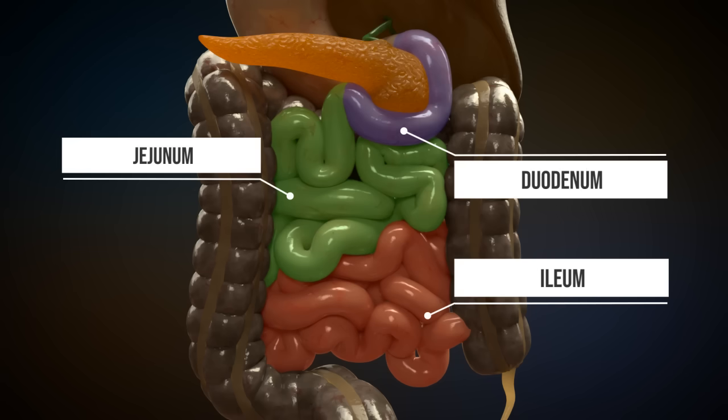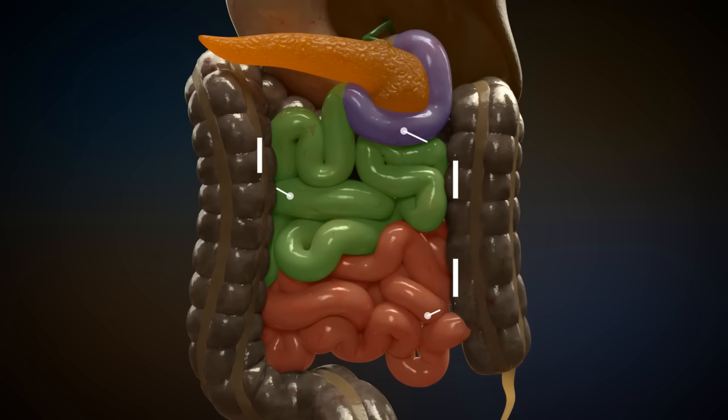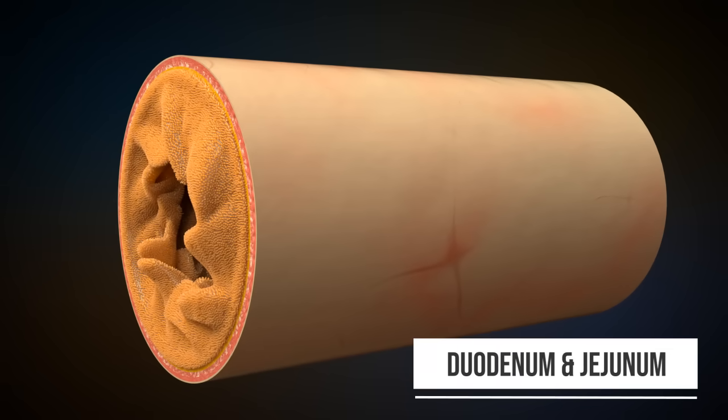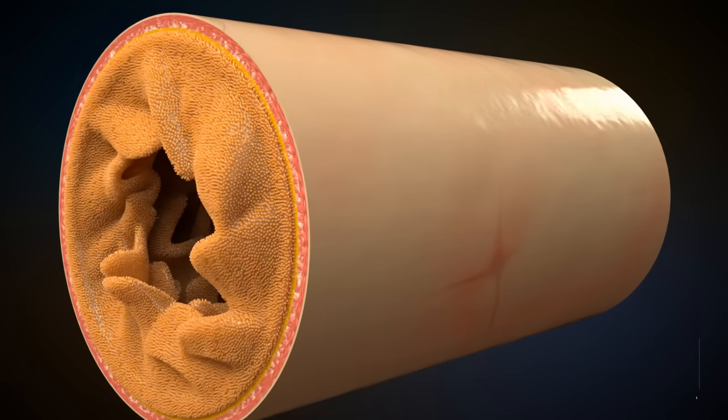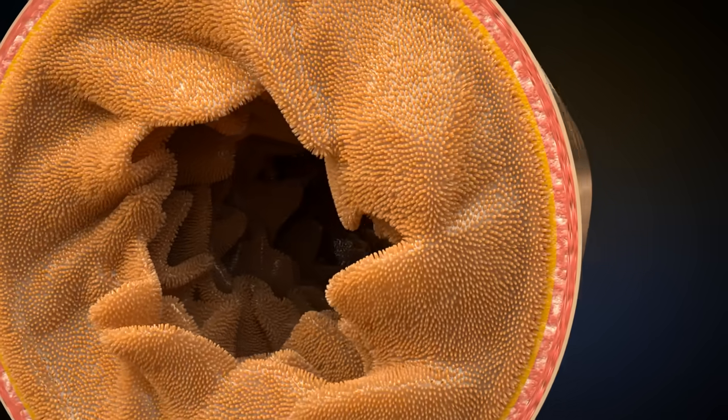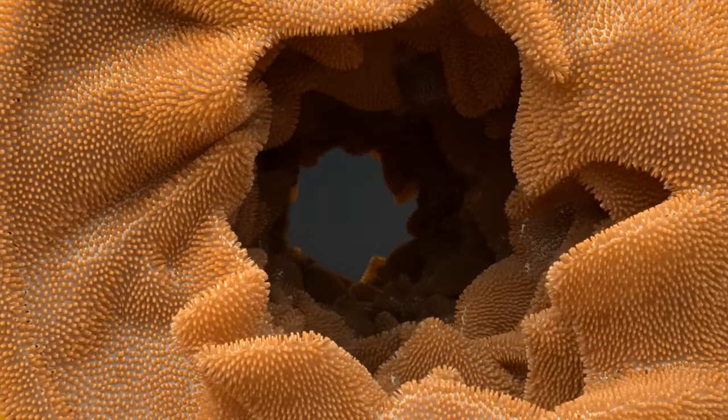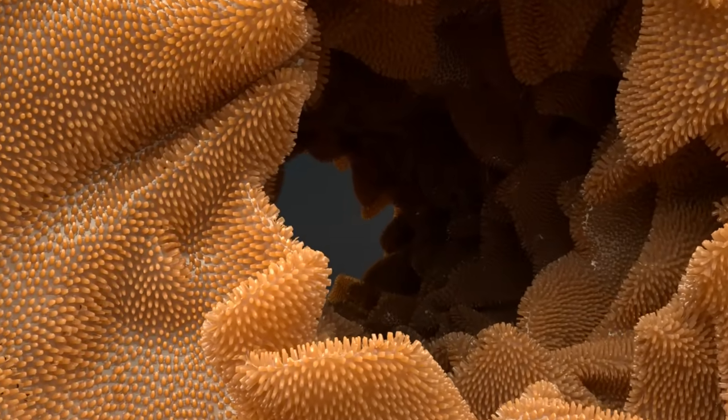The duodenum and the jejunum have circular folds to increase the contact surface with the food. These circular folds extend about one centimeter into the lumen of the small intestine.